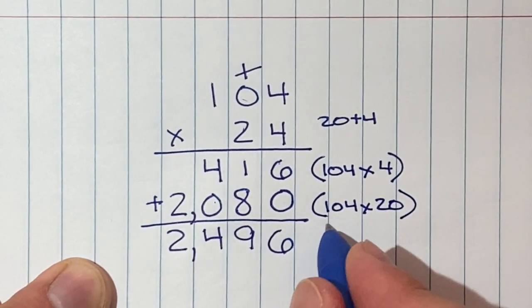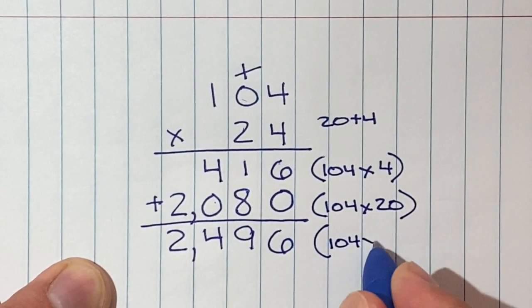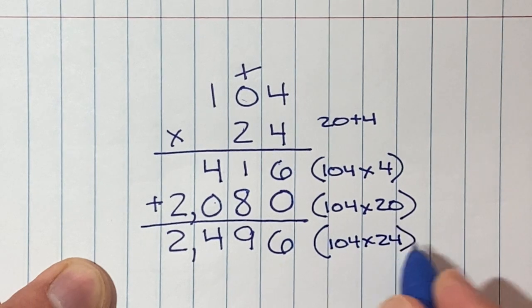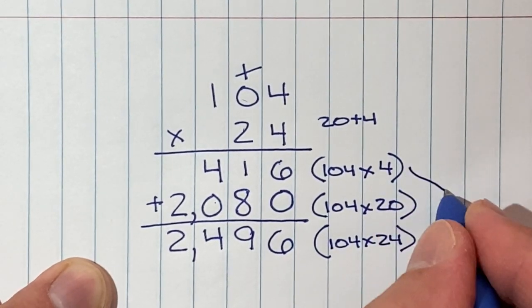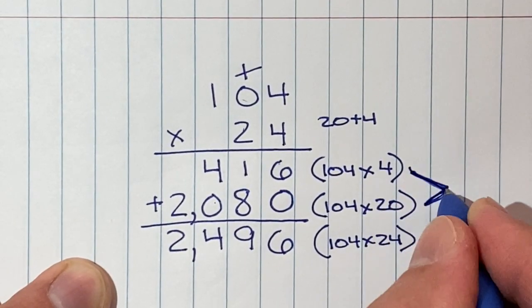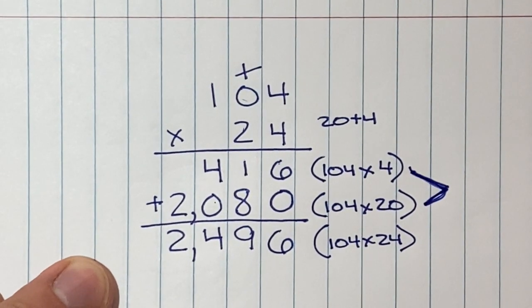And the total answer obviously is 104 times 24. So we broke these two apart, we broke 24 apart into these two, and they become back together again, 24.